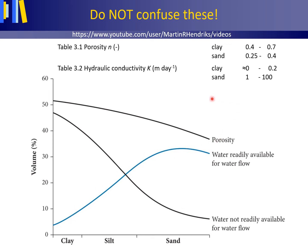This is also reflected in the hydraulic conductivity values. The saturated hydraulic conductivity, usually abbreviated to hydraulic conductivity, is a proportionality factor in Darcy's law by which both the water and the material through which the water flows are taken into account. Typically, clay has a higher porosity than sand, but sand has a higher hydraulic conductivity than clay. The porosity is a dimensionless number, while hydraulic conductivity is expressed in meters per day, so please do not confuse these.